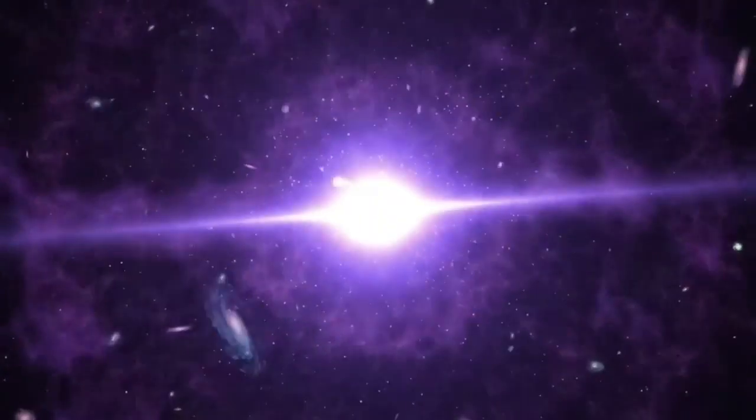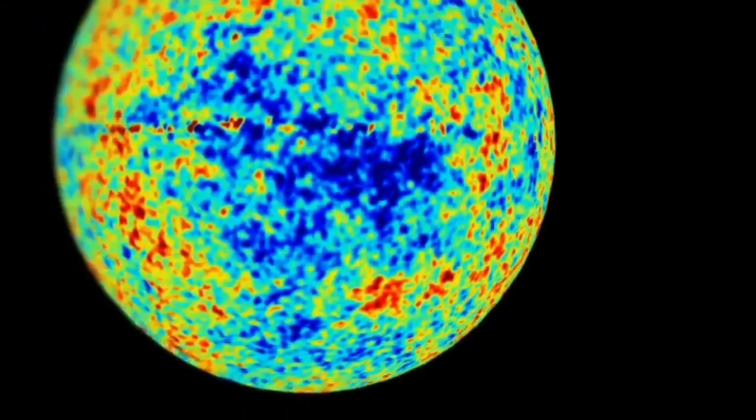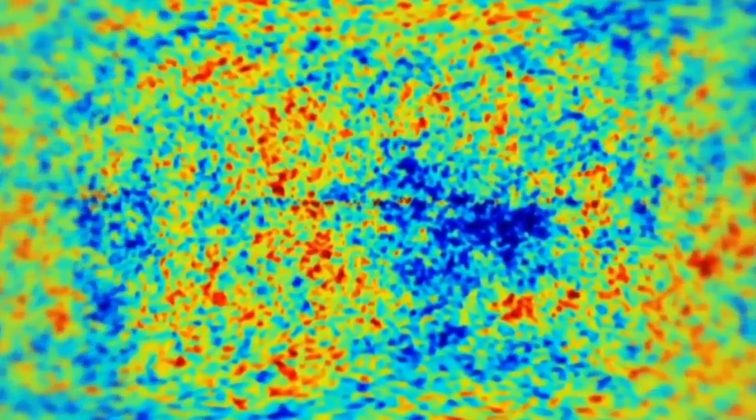In 1927, a Belgian priest and astronomer named Georges Lemaître proposed the theory of the Big Bang. According to the theory, the universe began as a singularity.